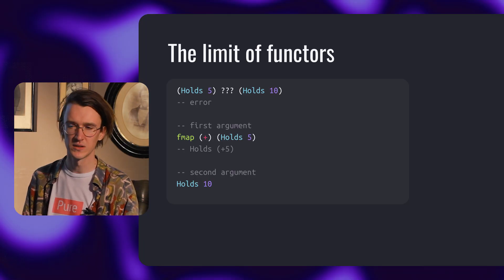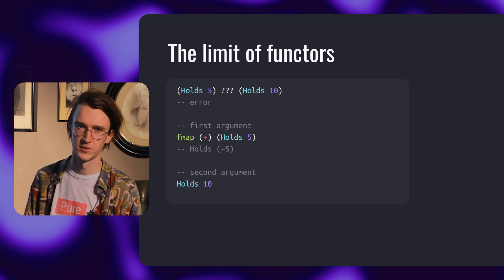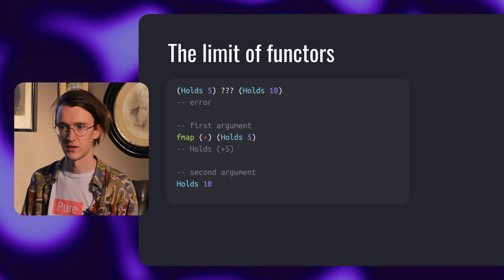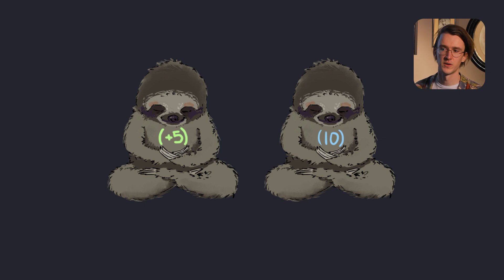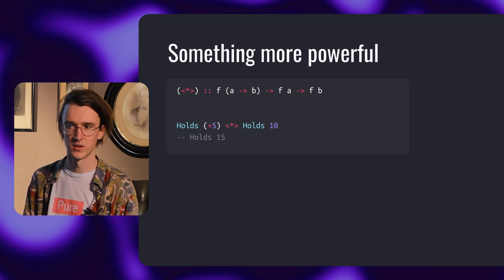For example, what if we want to add holds 5 to holds 10? We can use fmap to partially apply plus to the first argument, but this is what we get so far. Both our value and our function have a context and cannot be simply applied to each other. We need something more powerful than fmap — something that could deal with a function that has context. The apply function is exactly what we need. The apply function of applicative is a generalization of fmap to multiple arguments. Applicative is a subclass of functor.